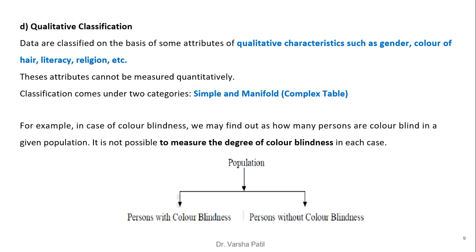Qualitative classification: data are classified on the basis of qualitative attributes such as gender, color of hair, literacy, religion, etc. These attributes cannot be measured quantitatively. Classification comes under two categories: simple and manifold (also called complex) table. For example, in the case of color blindness, we may find out how many persons are color blind in a given population, but it is not possible to measure the degree of color blindness in each case.